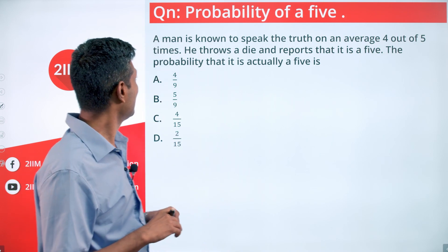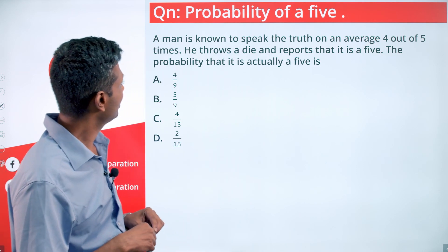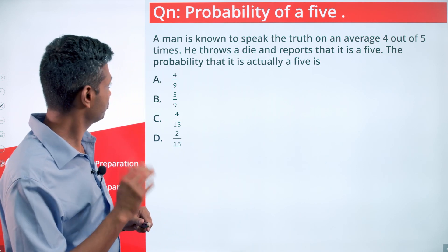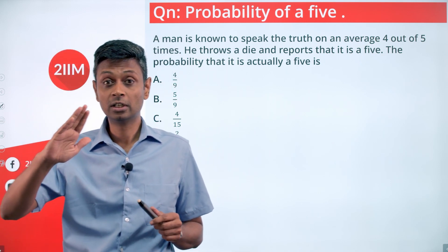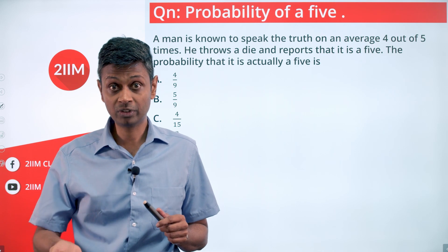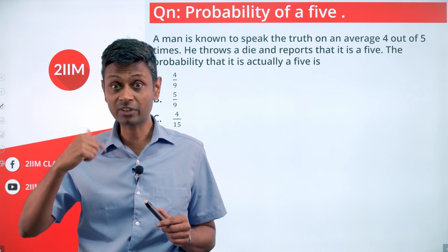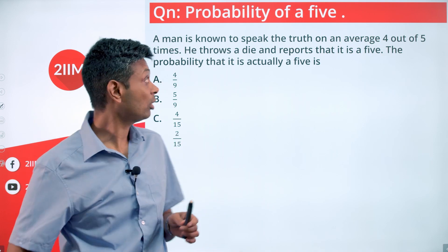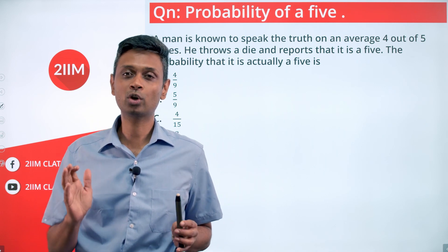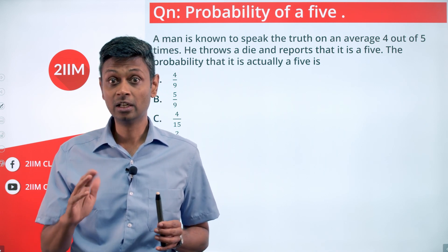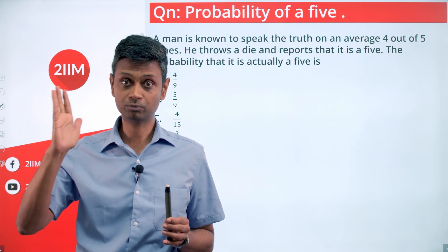A man is known to speak the truth on average four out of five times. He throws a die and reports that it is a five. The probability that it actually is a five — this is a classic question. He has reported it as a five and you have to find the probability that it is a five. Given it is a five, the probability he reports a five is four by five. He has said it is five — what is the probability that it actually is five? That's what we're trying to find.